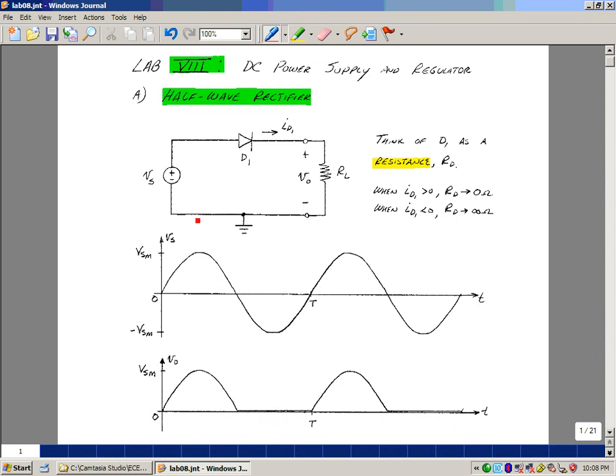When we go negative, current wants to flow in this direction. We've got the series combination of two resistors, but this resistor looks like an open circuit or infinity, so no current flows. So the drop across this resistor, R sub L, is just going to be zero times R sub L. It's going to give us zero volts.